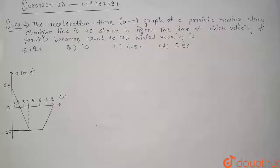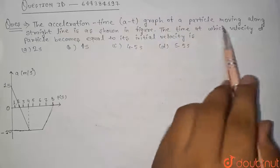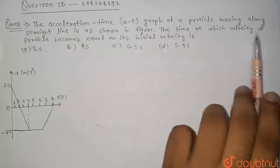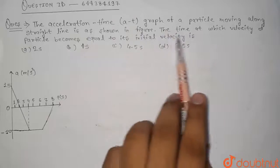Hello guys, so today's question is the acceleration time graph of a particle moving along a straight line is as shown in figure. The time at which velocity of particle become equal to its initial velocity.